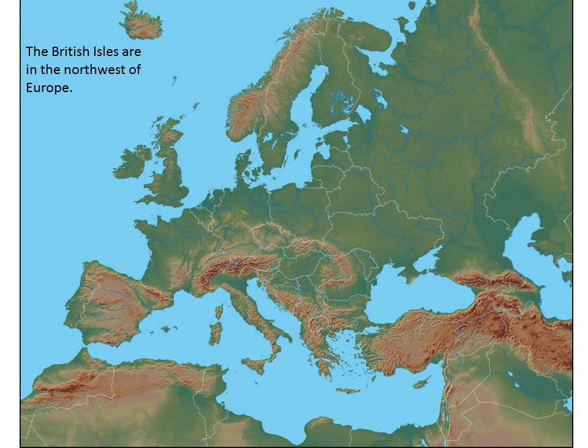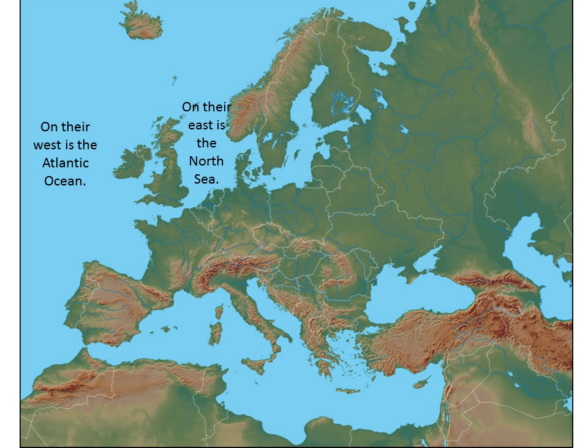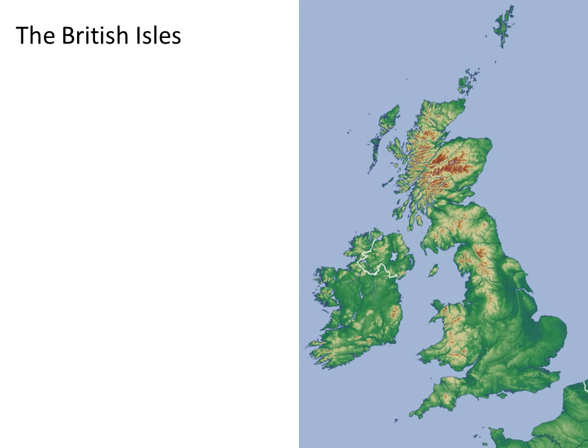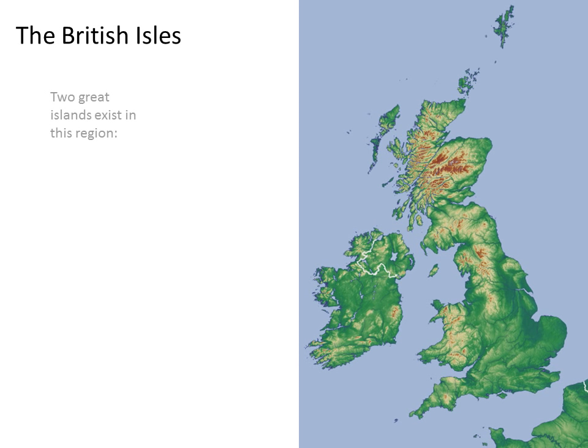The British Isles are in the northwest of Europe. On their west is the Atlantic Ocean, and on their east is the North Sea. They are separated from the continent of Europe by the English Channel. Two great islands exist in this region: Great Britain and Ireland.